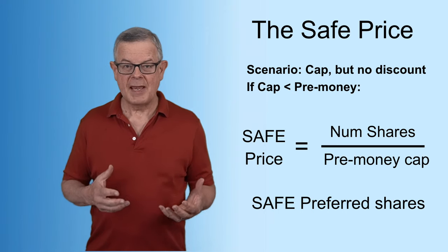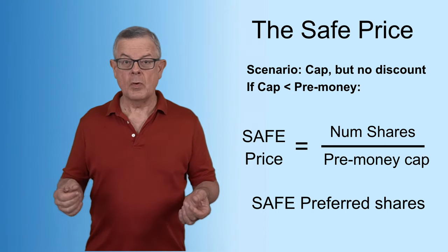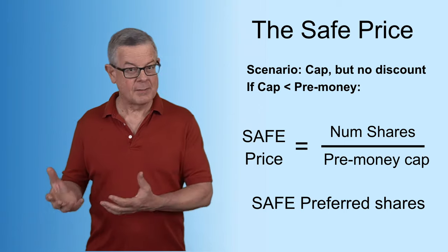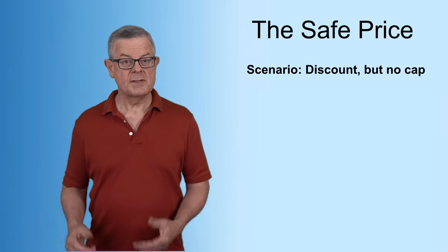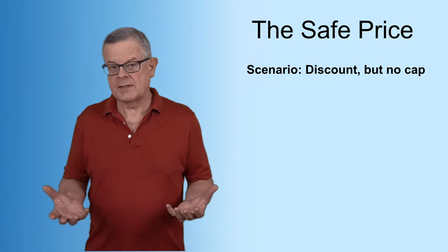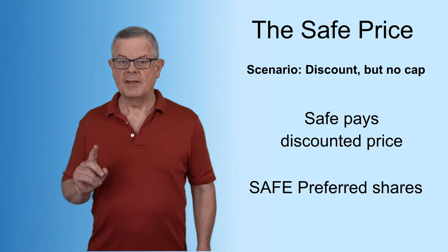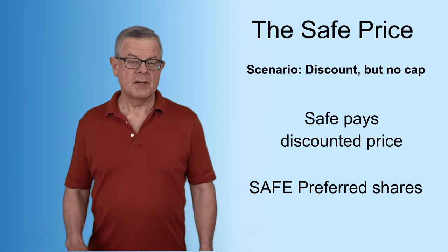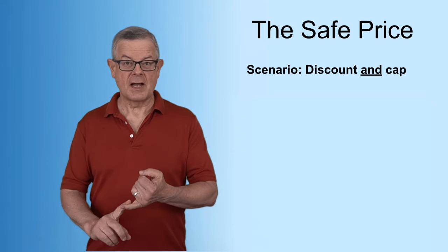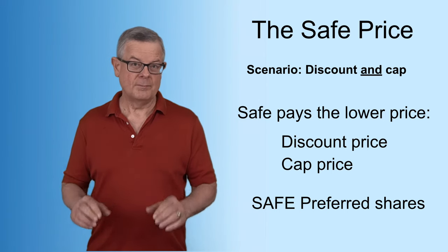By definition, that will be a lower price than is paid by the future equity investors. If the pre-money value in that future round is equal to or lower than the cap amount, then the SAFE investors receive the same stock at the same price as those equity investors. Now consider the scenario of a discount but no cap — in that case the SAFE investor receives the stock at that discounted price, and since it's a lower price, they'll receive the SAFE preferred shares. What if the SAFE money has both a discount and a cap? You calculate the stock price with the discount, you calculate it again with the valuation cap, and the SAFE investor gets the lower of those two prices.